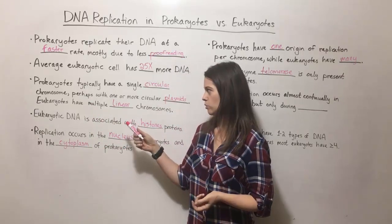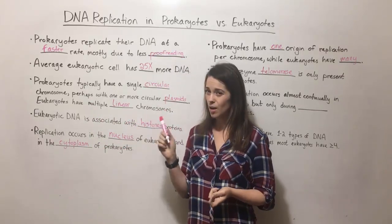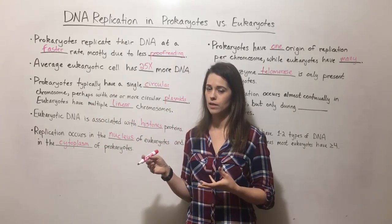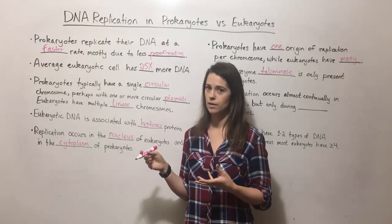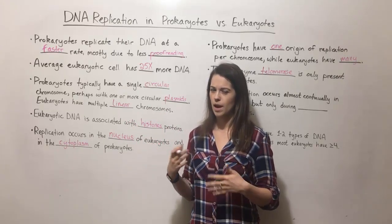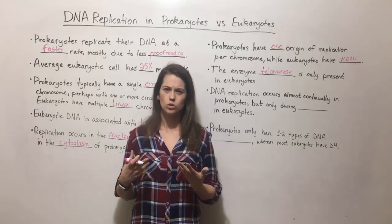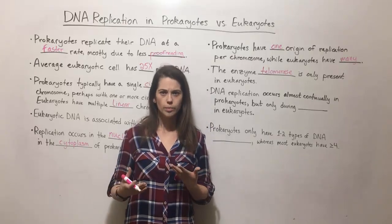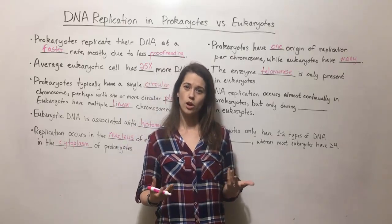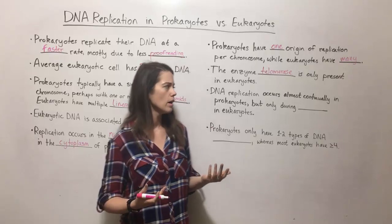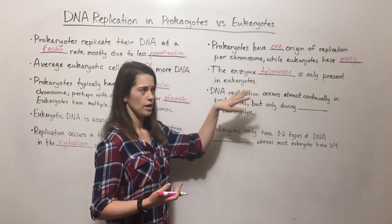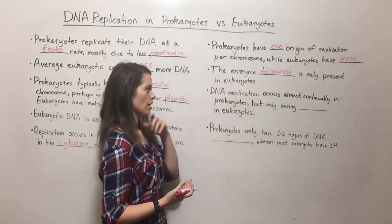In the prokaryotes that do have linear DNA, there is some kind of telomeric structure, but how it gets replicated is not well understood at this point. The telomerase enzyme is specifically associated with eukaryotic cells.